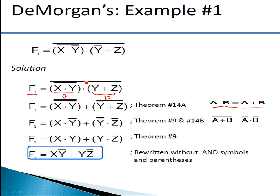Applying De Morgan's first theorem using the shortcut — break the line, change the sign. So (x · ȳ)̄ with one more bar becomes (x · ȳ)̄̄, and the dot becomes plus. Then (ȳ + z)̄ is written by applying De Morgan's first theorem.